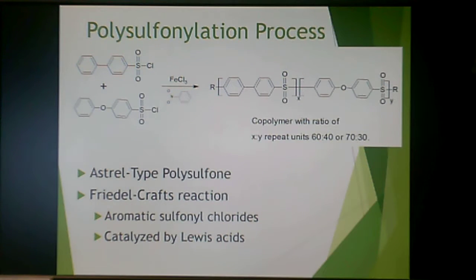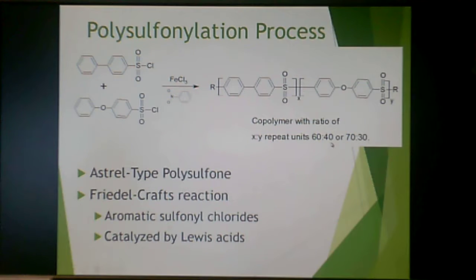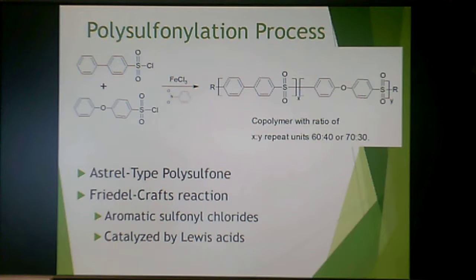This is polysulfonylation — a Friedel-Crafts type reaction for those of you who are chemistry enthusiasts. This produces the Astral type of polysulfone. You start off with these chloride monomers and this produces this particular polymer. The copolymer has repeat units with ratios of 60:40 or 70:30 of one monomer to the other. One monomer has an oxygen in the backbone which gives it some flexibility, but if you have too much of that monomer it will be too flexible and can compromise the thermal properties.